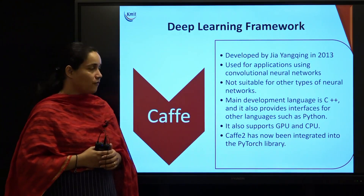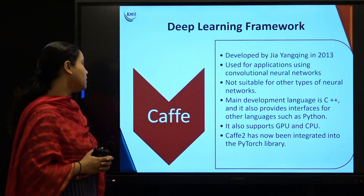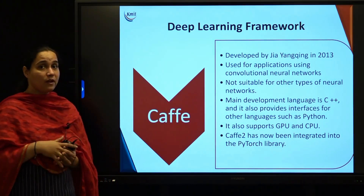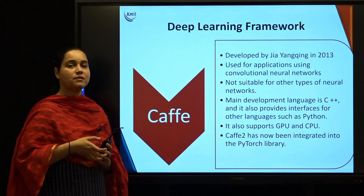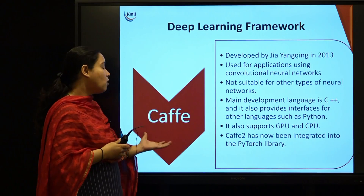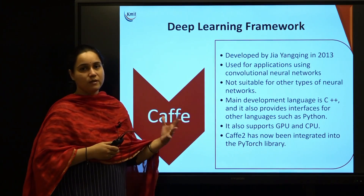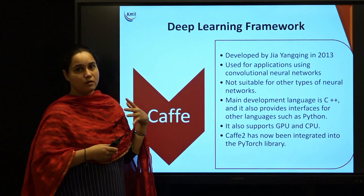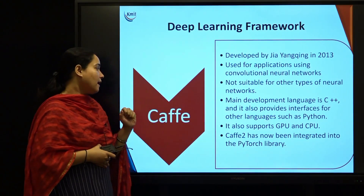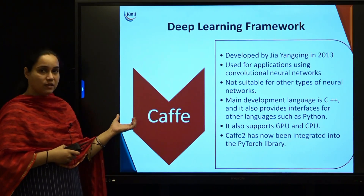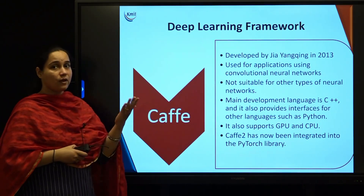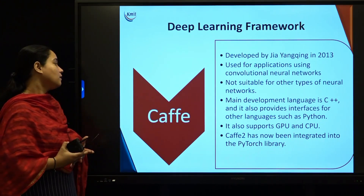Next is Caffe, introduced in 2013 by Jia Yangqing. It is useful for applications specifically using images, that is, convolutional neural networks, and is not suitable for other neural networks like recurrent neural networks. The development language used in Caffe is C++, and it provides interfaces for other languages including Python.